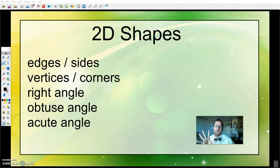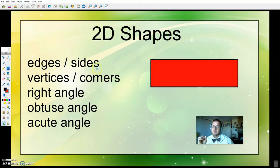There's all sorts of things we're going to be learning about from sides to angles and everything in between. How about we get to it? To be able to understand two-dimensional shapes, we need to understand these five vocabulary words first: edges or sides, vertices or corners, right angles, obtuse angles, and acute angles.